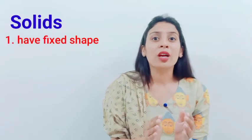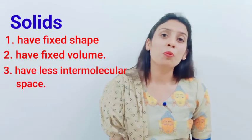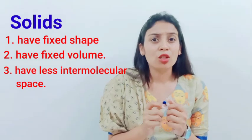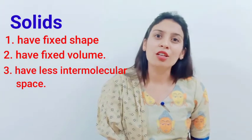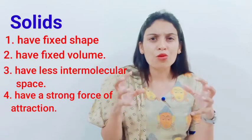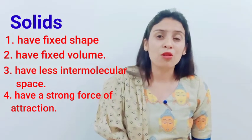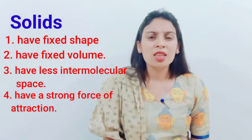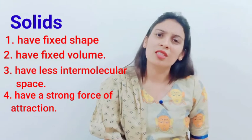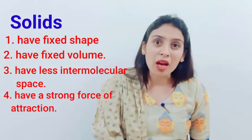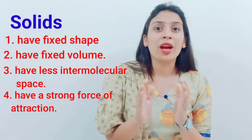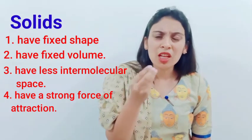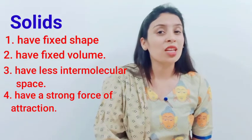Let us begin with the properties of solid. Solids have a fixed shape and a fixed volume. The intermolecular space between the particles of solid is very, very less. Space between two particles is known as intermolecular space. Also, there is a strong force of attraction between particles of solid. This force of attraction is maximum in solids. Because of this strong force, solids are rigid — they have fixed volume and fixed shape. And because there is very less space between the particles, it is not easy to compress solids.